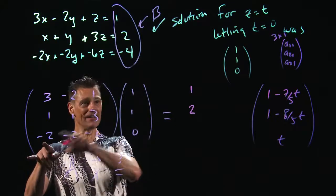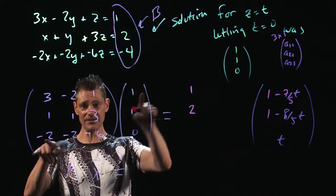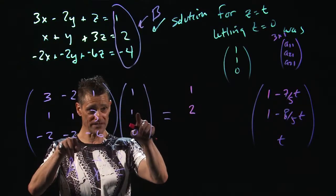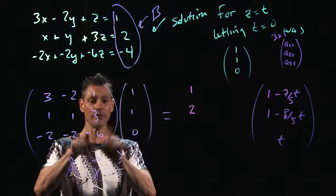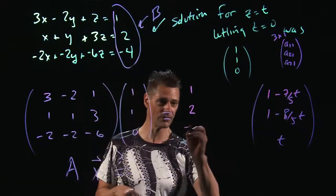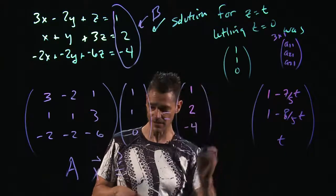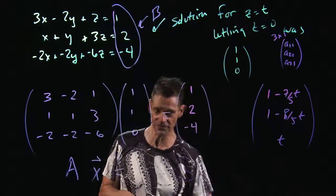And then it's going to be -2 times 1 is -2. -2 times 1 is -2. -2 and -2 is -4. Plus -6 times 0 is -4. And there it is. We found the solution to it.